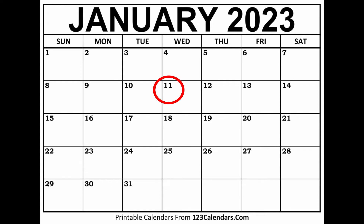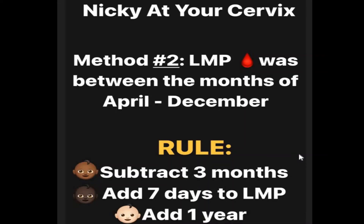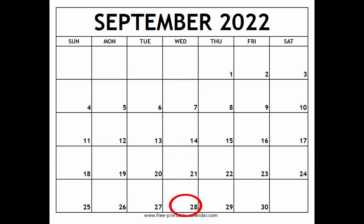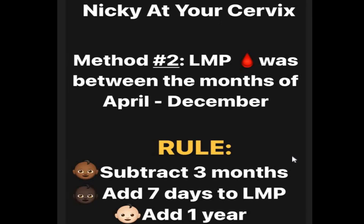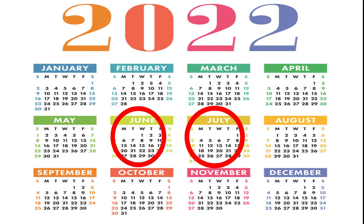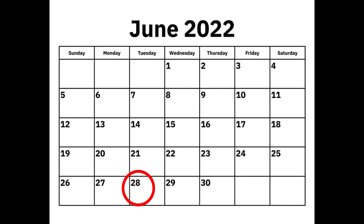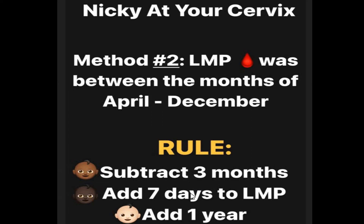Now let me give you a trickier example to show why the '30 days in September, April, June' mnemonic comes in handy. Say the first day of your last menstrual period was September 28. This falls between April and December, so we use Method Two. We subtract three months: the three months before September are August, July, and June — landing us at June 28, 2022. Next, we add seven to the day: 28 plus 7 gives us 35, and no month has 35 days, so we're going over into another month.